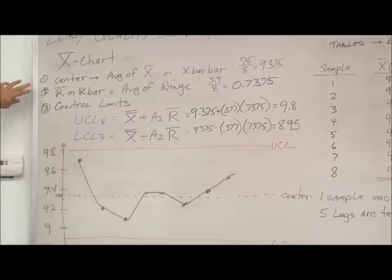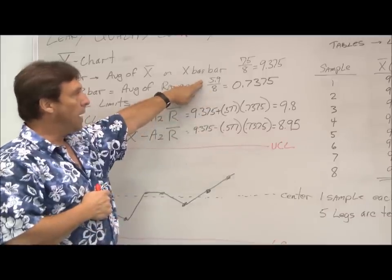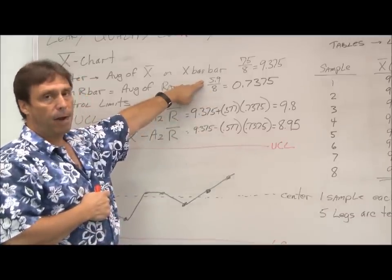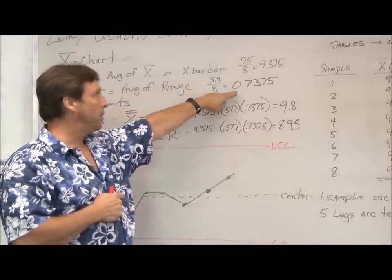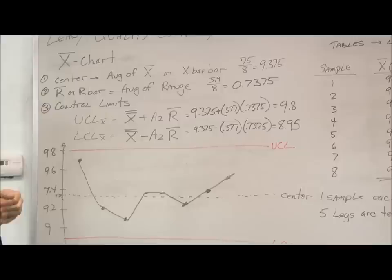We also have to calculate something called R bar, which is the average of our range. If we added up our range over the eight samples, we know that it comes to 5.9. If we add eight samples, the average is 0.7375.